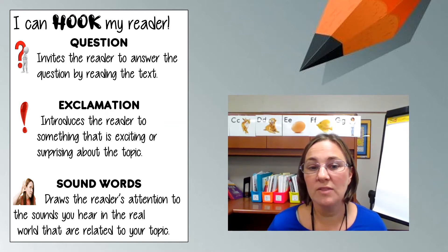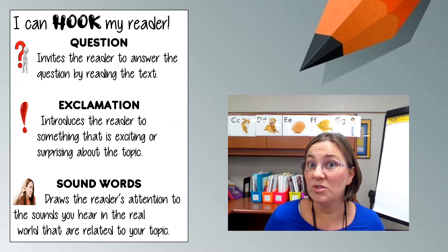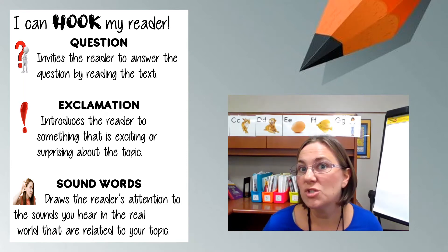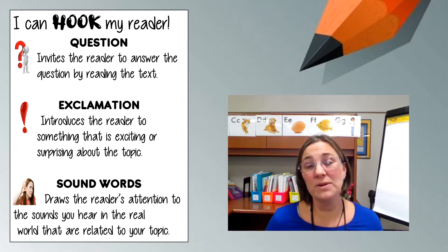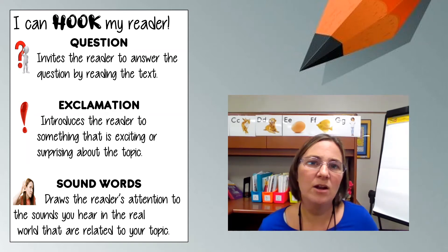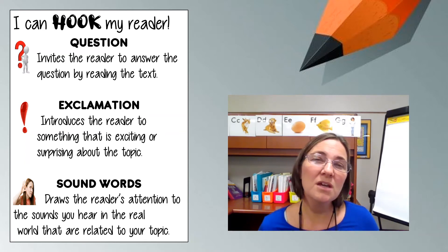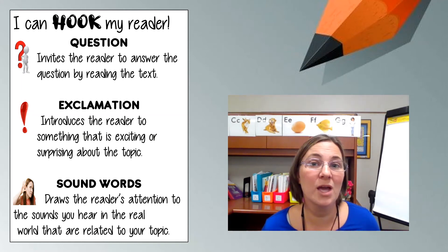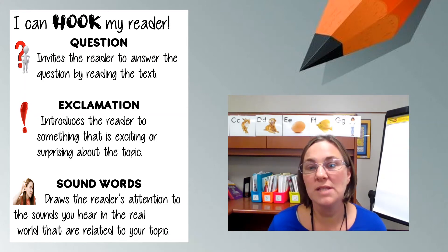I could try out my exclamation lead — that thing where we start with something exciting or surprising. One thing I think is surprising about dogs is that there are 324 different types, breeds of dogs. So maybe I'll start with that. I could say, 'With 324 breeds of dogs, there sure is a lot to learn about them.' That would be an exclamation that I could put at the beginning that maybe the reader would go, 'Wow, I didn't know that, let me keep reading.' And then for sound words, I'm thinking of sounds that make me think of dogs. A lot of times when my dog is in the other room I hear things like woof, woof and scratch, scratch, because my dog likes to scratch on the door.